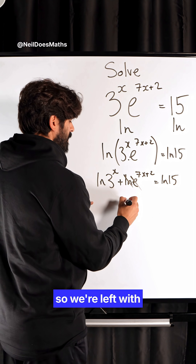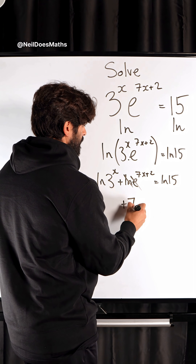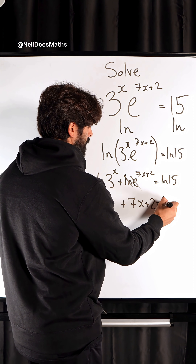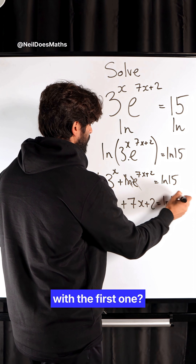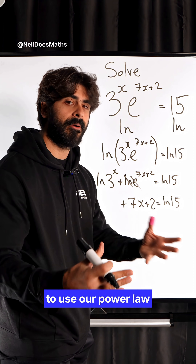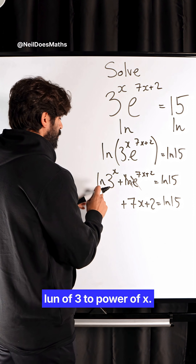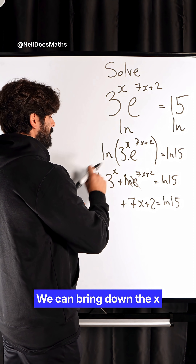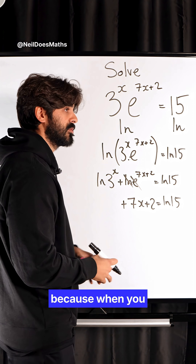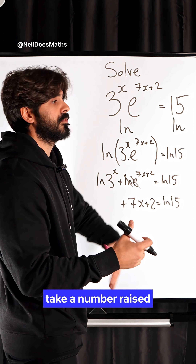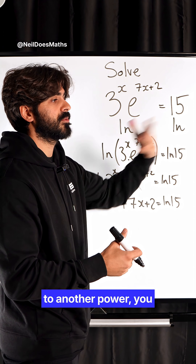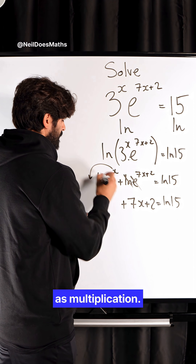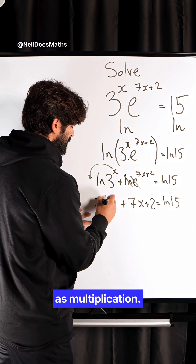ln cancels e, so we're left with 7x plus 2. But what happens with the first one? Well, here we're going to use our power law. ln of 3 to the power of x — we can bring down the x, because when you take a number raised to a power, raised to another power, you multiply the powers. So, we can rewrite this as multiplication.